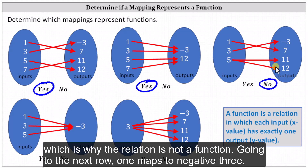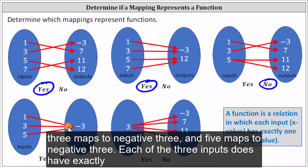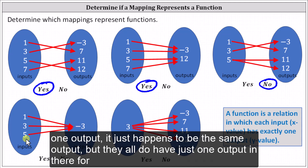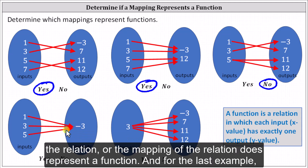Going to the next row, one maps to negative three, three maps to negative three, and five maps to negative three. Each of the three inputs does have exactly one output — it just happens to be the same output — but they all do have just one output, and therefore the mapping of the relation does represent a function.